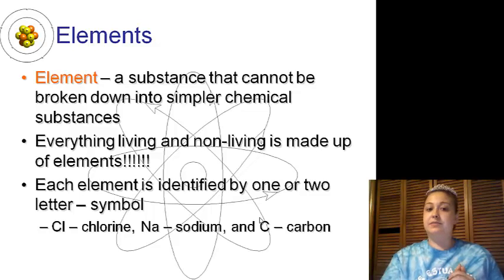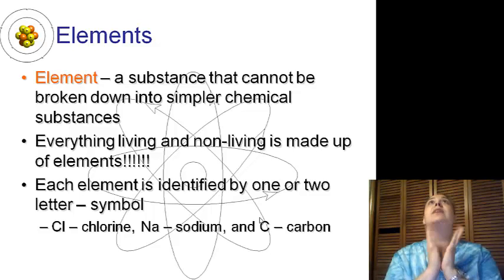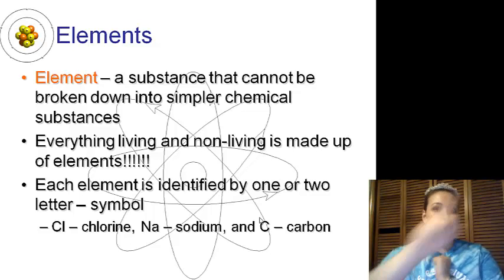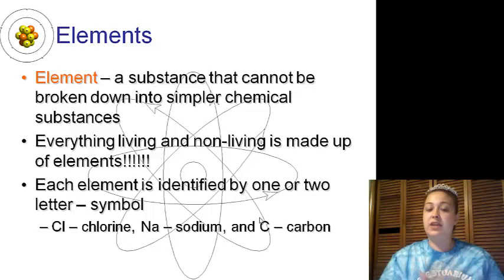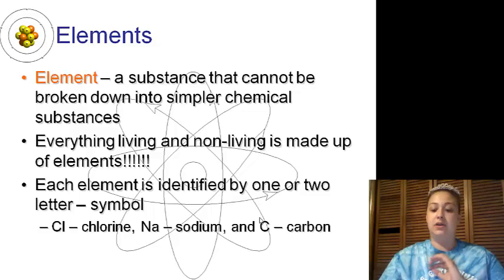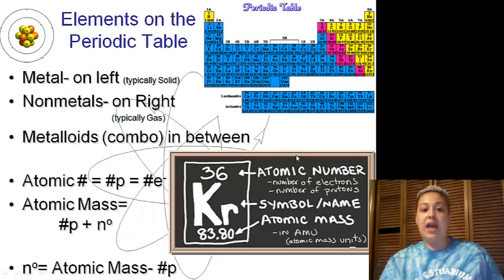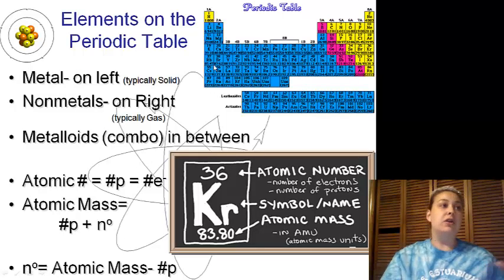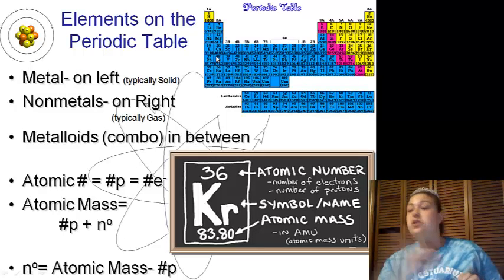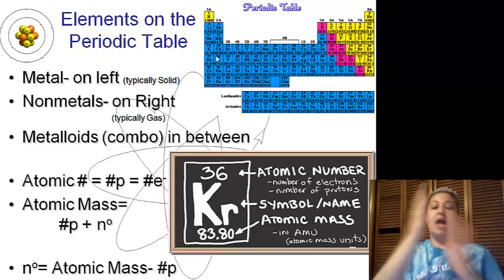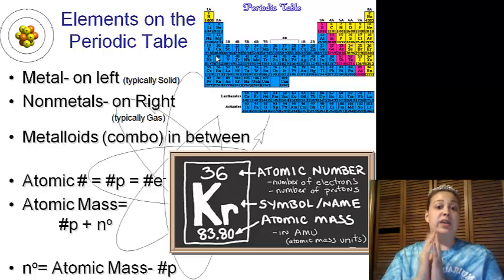Elements are a substance that cannot be broken down into simpler chemical substances, and every living and non-living thing is made up of elements. They are identified by a one to two letter symbol. Looking at the periodic table, we have metals on our left, non-metals on our right, and in between we have metalloids, which are a combo.